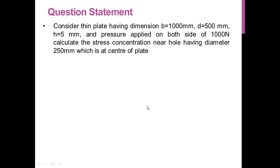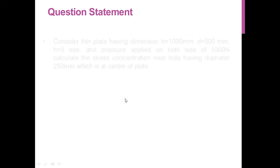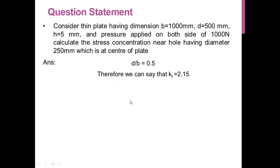Length of the plate is 1000 mm, width is 500 mm, thickness is 5 mm, and the hole at the center has diameter 250 mm. By the numerical method, the D-to-B ratio — that is diameter to width — is calculated as 0.5. From the stress concentration graph, the stress concentration factor Kc for this plate is 2.15.